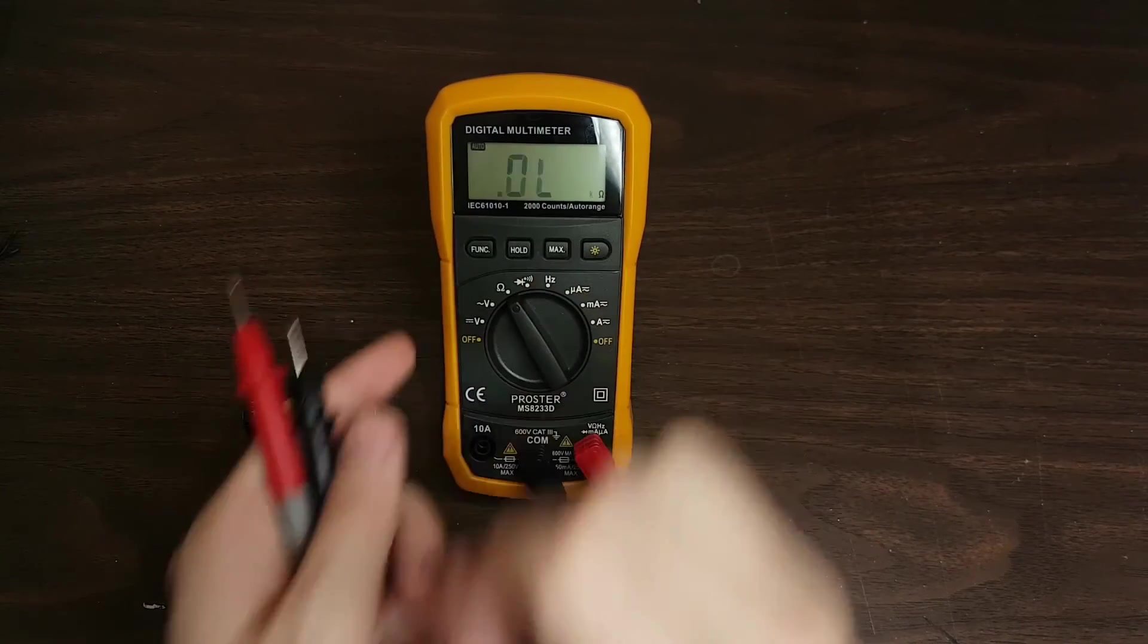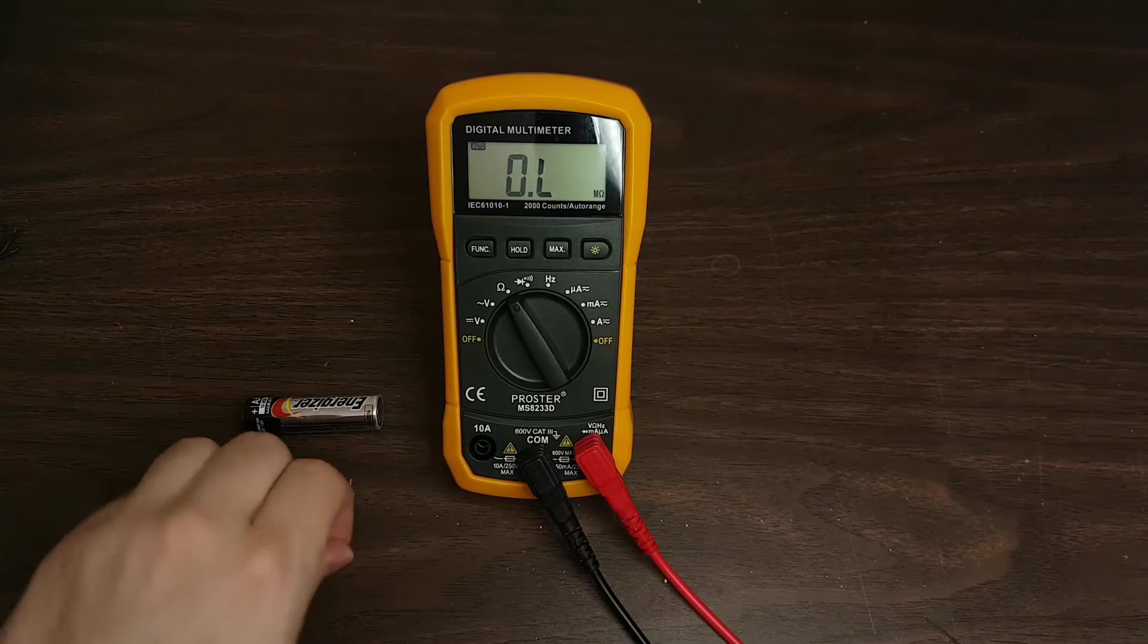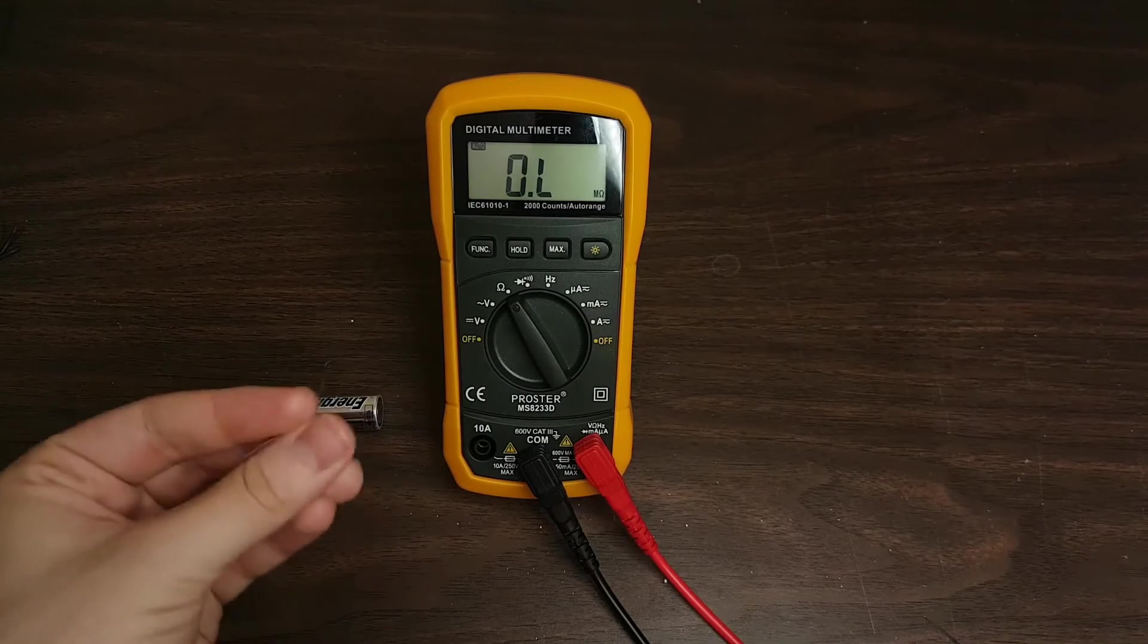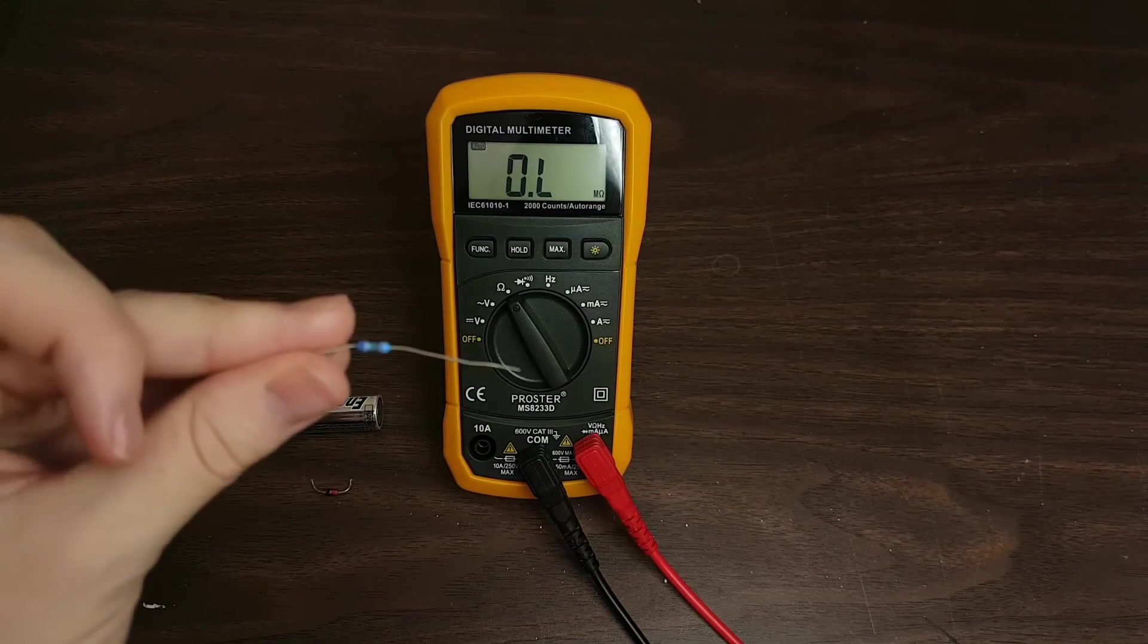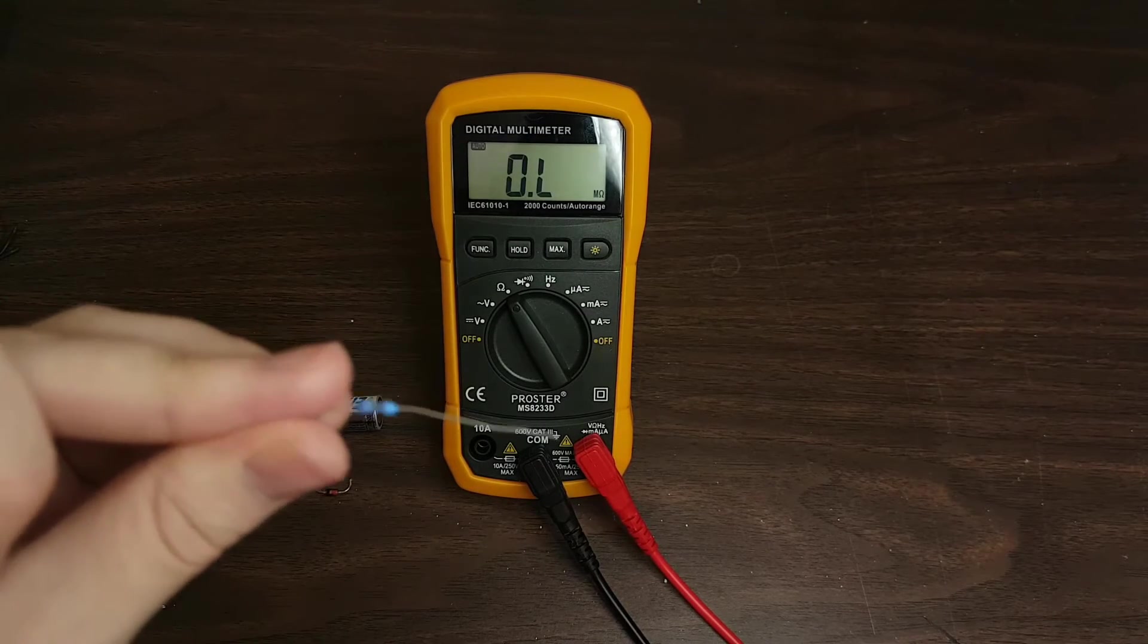So we change it to ohms now. I'm going to test the resistor. This resistor is a 82.5 ohm resistor.